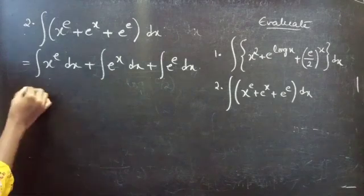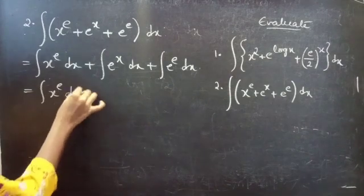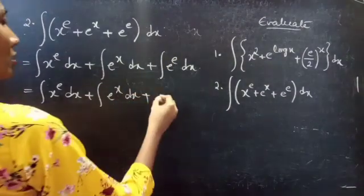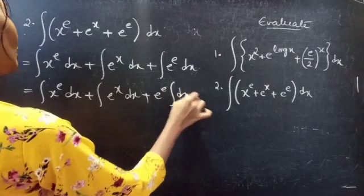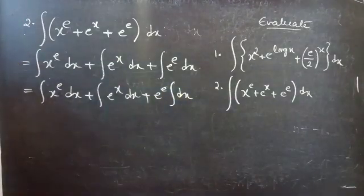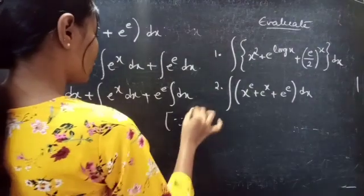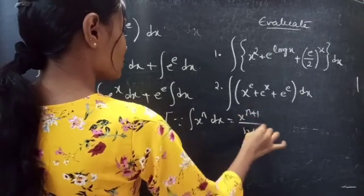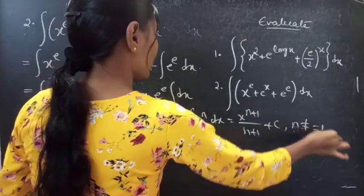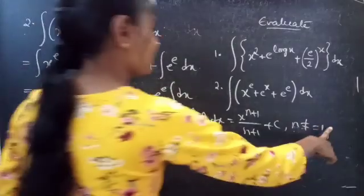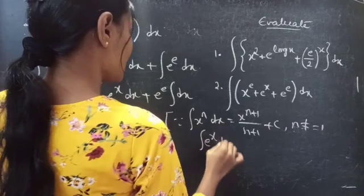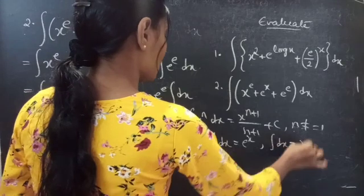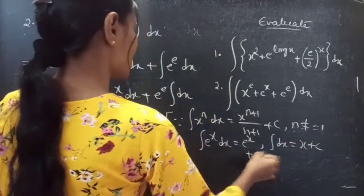Take the constants outside the integral — e power e is a constant, so you can write it outside the integral, giving e power e into the integral of dx. Since the integral of x power n dx equals x power n plus 1 by n plus 1 plus c for n not equals to minus 1, and the integral of e power x dx equals e power x, and the integral of dx equals x plus c.